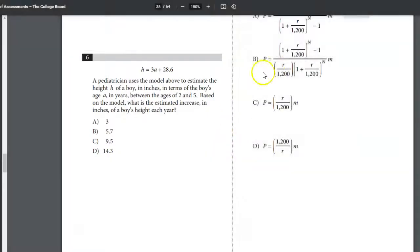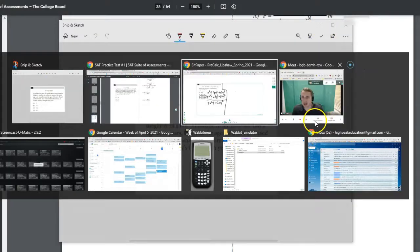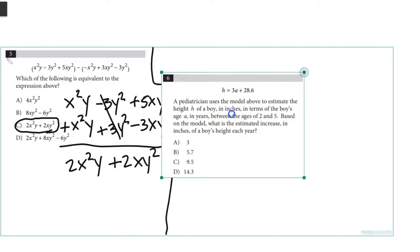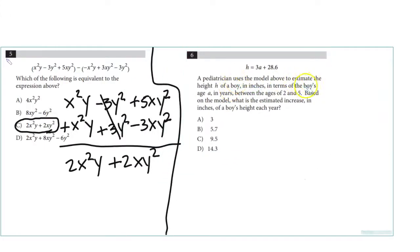Number 6: A pediatrician uses the model above to estimate the height h of a boy in inches in terms of the boy's age A in years, between ages 2 and 5. Based on the model, what is the estimated increase in inches of the boy's height each year? This is the starting value, and this right here is the increase due to the slope. The slope should be 3 inches per year. So that would be 3.